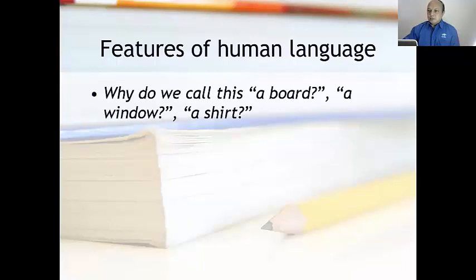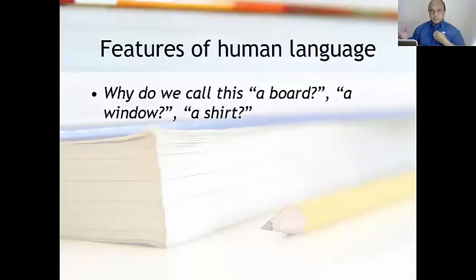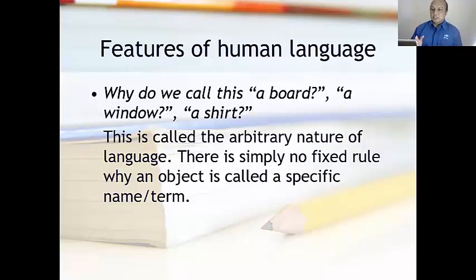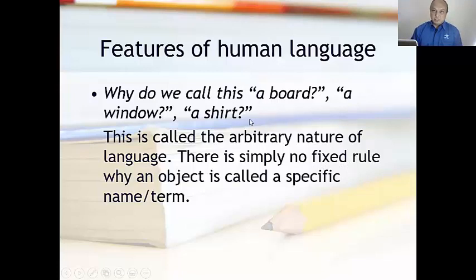The next feature — why do we call something that hangs on the wall of the classroom a board, or a window, or a shirt? This is called the arbitrary nature of language. Arbitrary means there is no specific rule, no specific pattern that says this has to be called that, or this has to be called a shirt or a finger. There is no rule for that, and that's why it is called arbitrary. Arbitrariness is also a feature of human language — there is simply no fixed rule while an object is called a specific name or term.